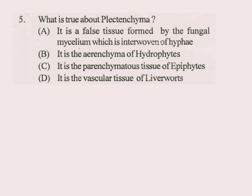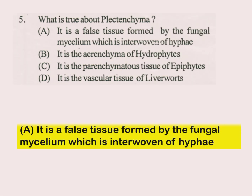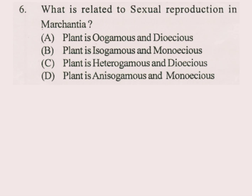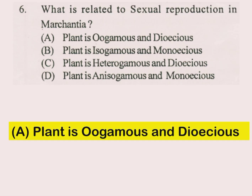Question number 5. What is true about Plectenchyma? This question is from fungi. The answer is A part. Plectenchyma is a false tissue formed by the fungal mycelium which is an interwoven of hyphae. Question number 6. What is related to sexual reproduction in Marchantia? The answer is A part: plant is oogamous and dioecious.